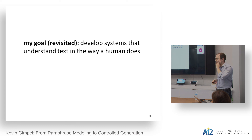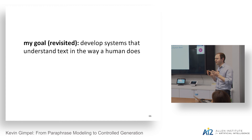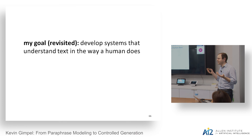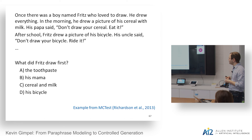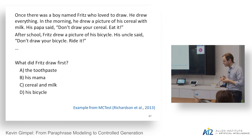That's all I wanted to say about paraphrase modeling and controlled generation. Looking forward, my goal is to understand text the way a human does, and we clearly need to move beyond the sentence level. The MCTest dataset I worked on a few years ago — simple stories with multiple-choice questions — has fundamental natural language understanding challenges we haven't solved. Most of what's happening in those stories involves inter-sentence relationships, requiring understanding of narrative beyond individual sentences.